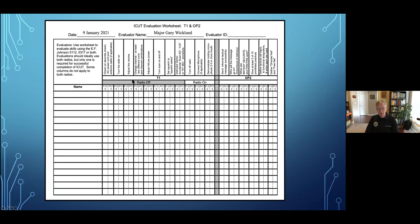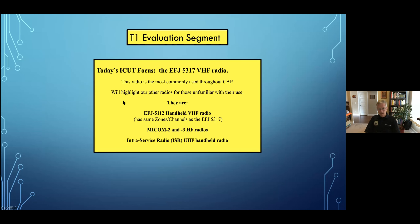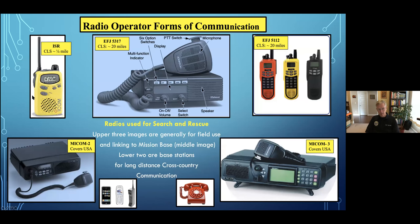Today we're going to cover the 5317 — I don't have the handheld 5112 equivalent, so I will focus on the 5317. I also added a couple of slides for the intra-service radio to give people a quick look at it. These are the three types most commonly used across squadrons. The ISR is good for about a quarter mile, especially with fresh batteries. We used to use these in Idaho with our ground team — the ground team lead had the main radio and search members had the little ISRs.